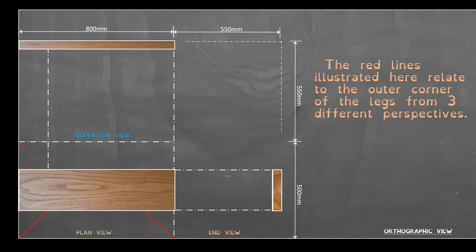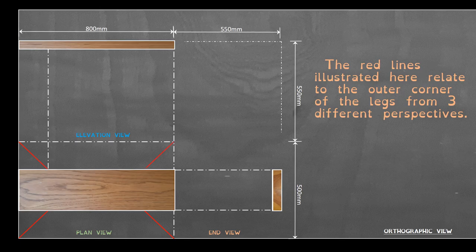The red lines illustrated here relate to the outer corner of the legs from 3 different perspectives. You will also start to see lines projecting between views. Often one view cannot be complete without points being projected from another view. The leg lines on the plan view are drawn at 45 degrees because the lean or pitch inwards at the side and end is the same, similar to a hip roof.